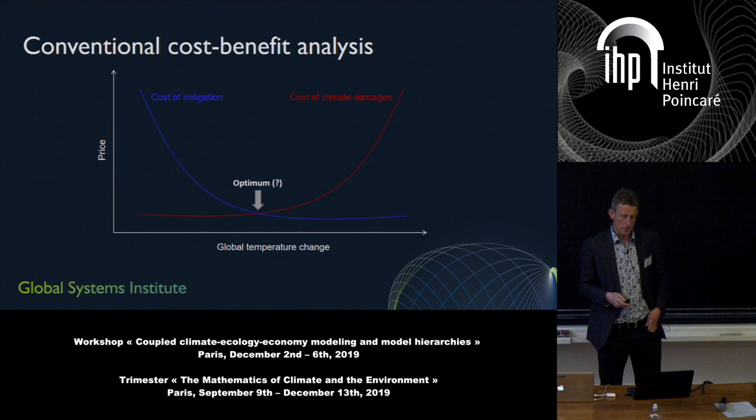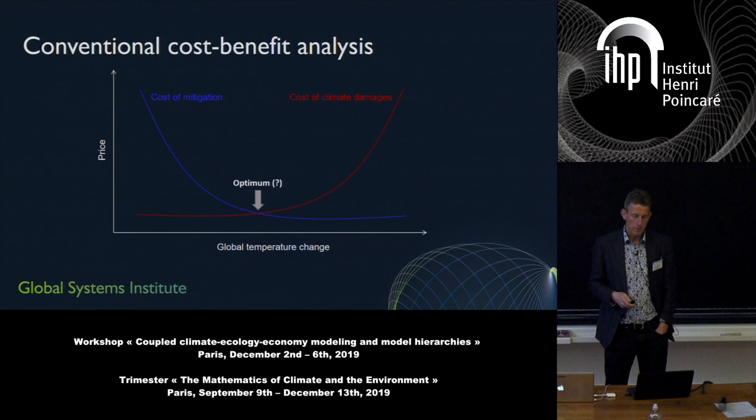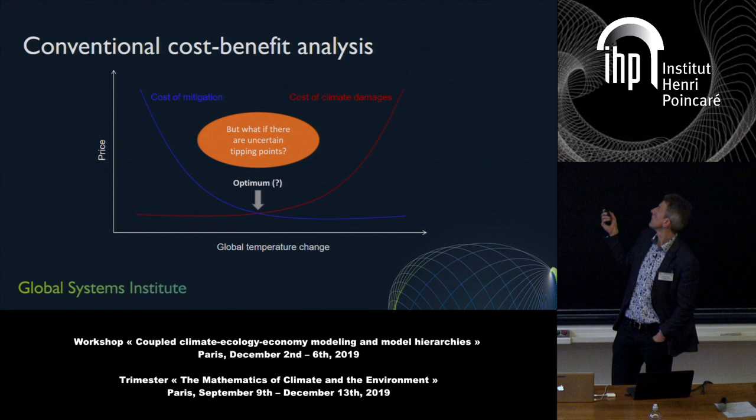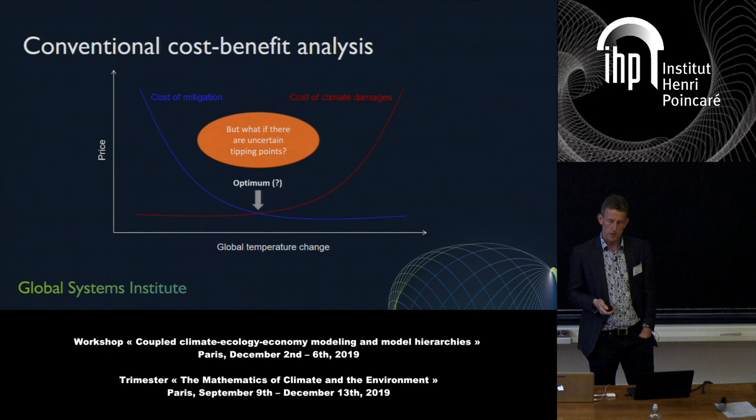I'm interested in: if we acknowledge that in the climate we don't perfectly know how it's going to behave, and there could be some uncertain tipping points at which the damages step up irreversibly — but we don't know exactly where they are — how does that affect the outcome of the analysis? That's the question I want to address.